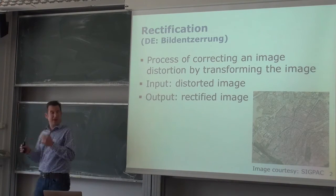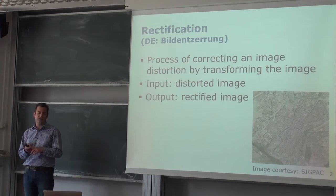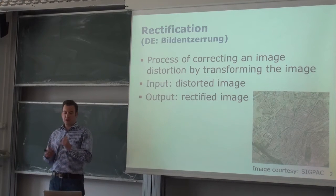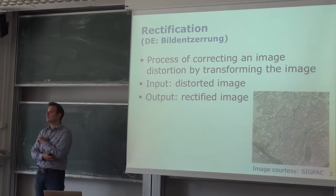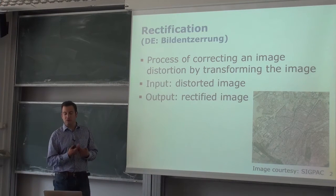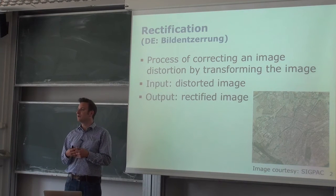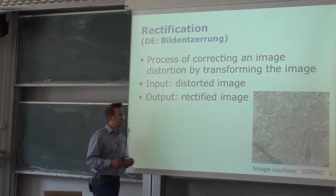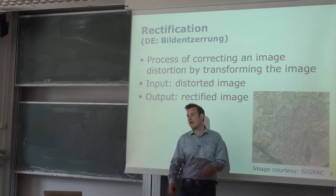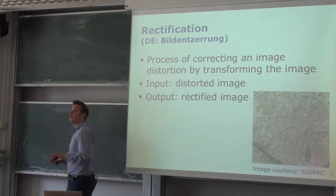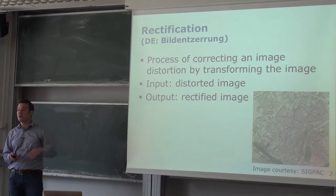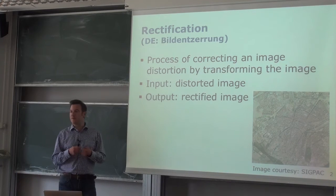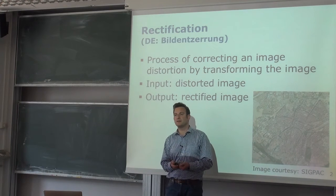Three main applications were mentioned in the last lecture. The first one is rectification, where we have an input image — potentially a distorted one — and we want to undistort or rectify it according to some information about the geometry of the scene. We have the example of an aerial image that we want to rectify according to the ground surface. This was the mapping from the distorted image to a rectified image.